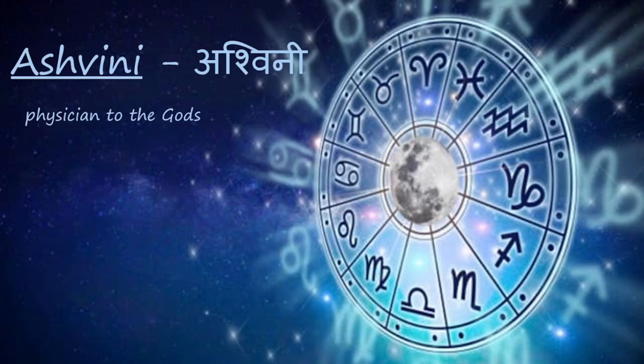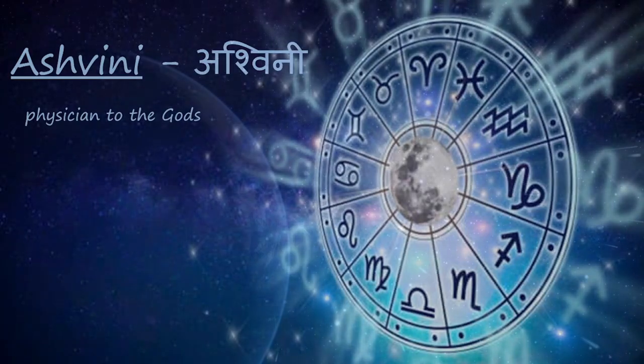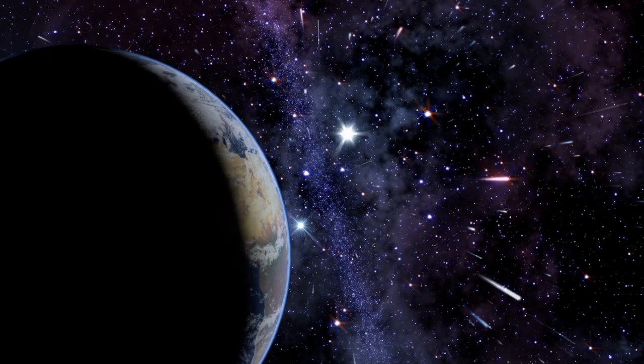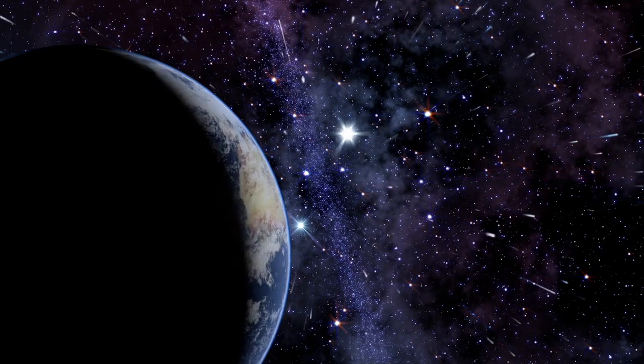Ashwini, Physician to the Gods. Ashwini is the first nakshatra, or lunar mansion, in Hindu astronomy. It has a spread ranging from 0 to 13.2 degrees in the Aries zodiac sign and is characterized by a couple of shining stars.